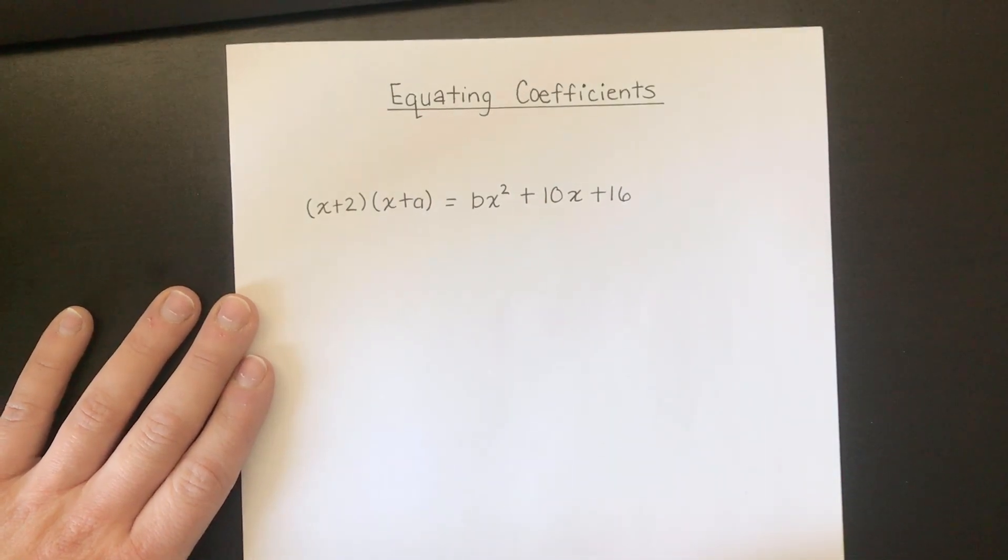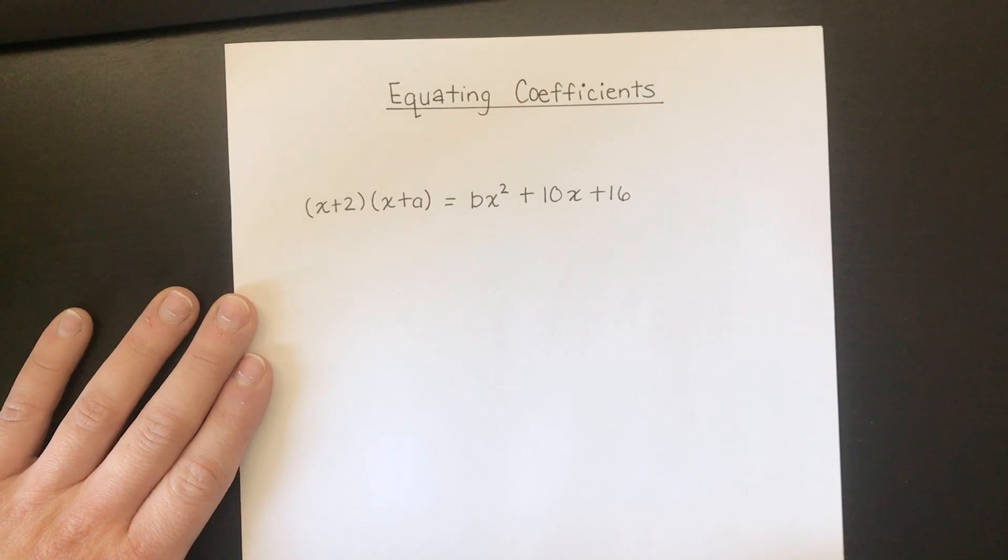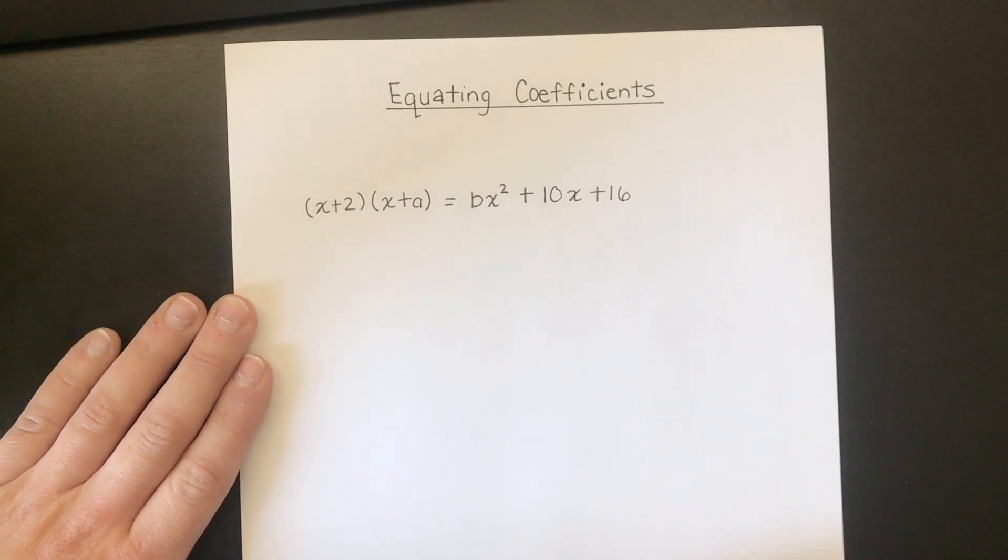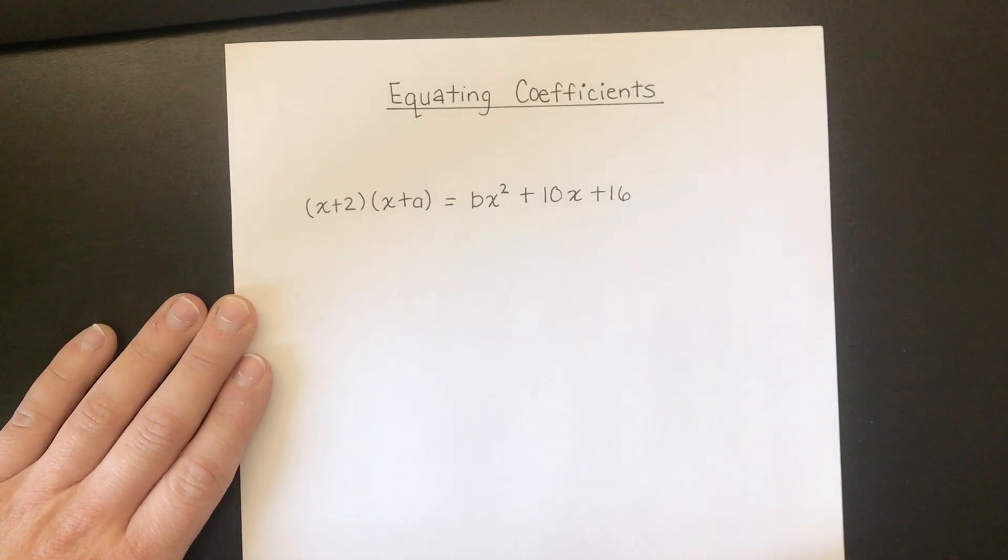Hi your tens! We're still working on our algebra. Today we're going to do something called equating coefficients. It's a really fancy way of saying expand these brackets and then say what all the different letters could be.